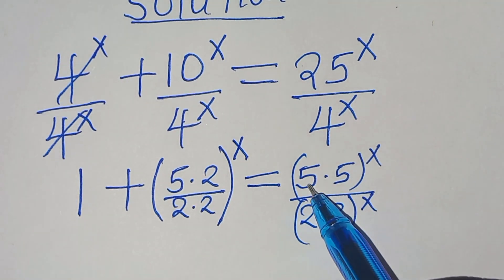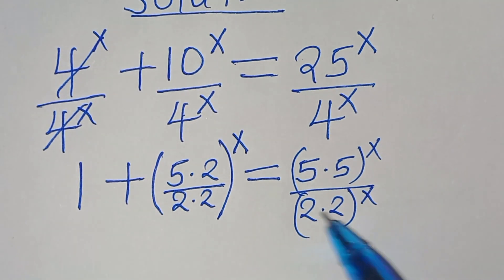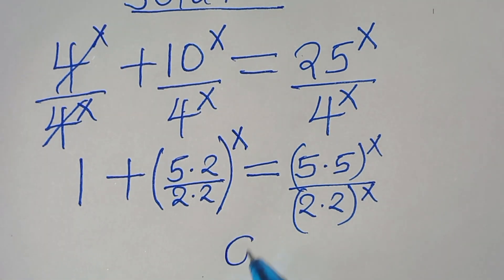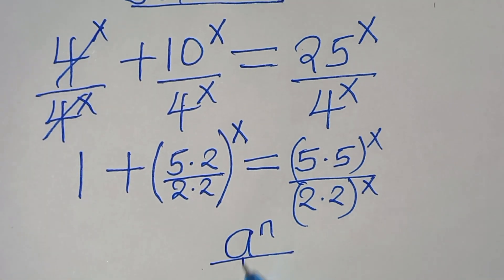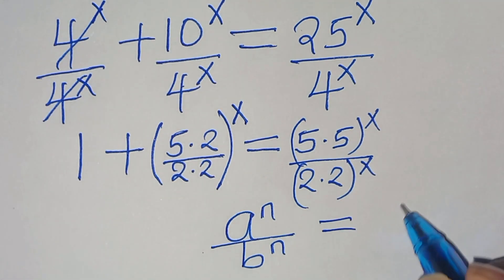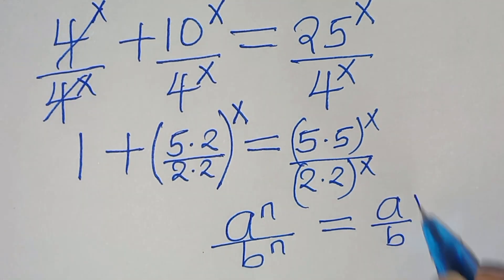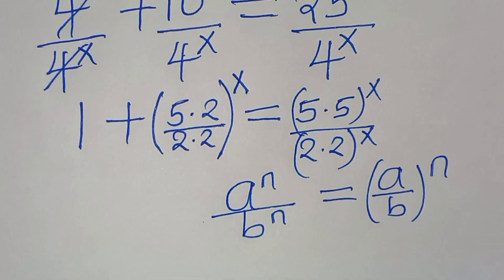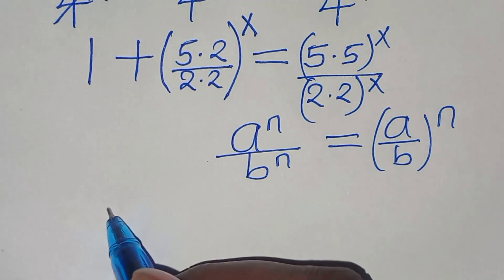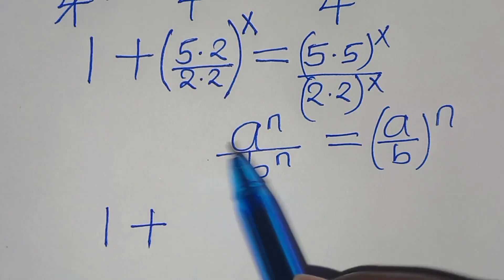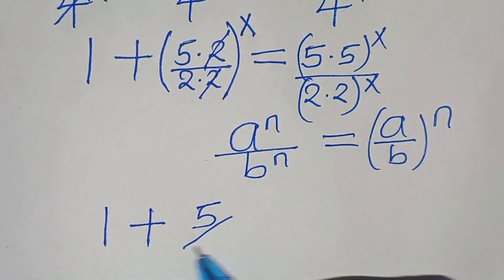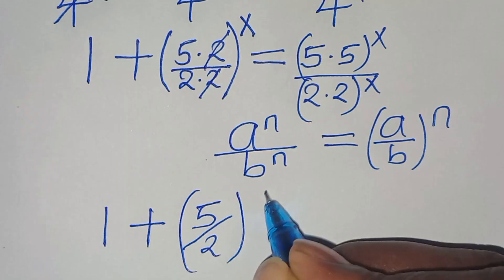We find that 5 times 5 raised to the power of x over 2 raised to the power of x is in the form a^n divided by b^n, which can be expressed as (a/b)^n. Applying this exponent property, we have 1 plus — simplifying the 2s — giving us (5/2) raised to the power of x.